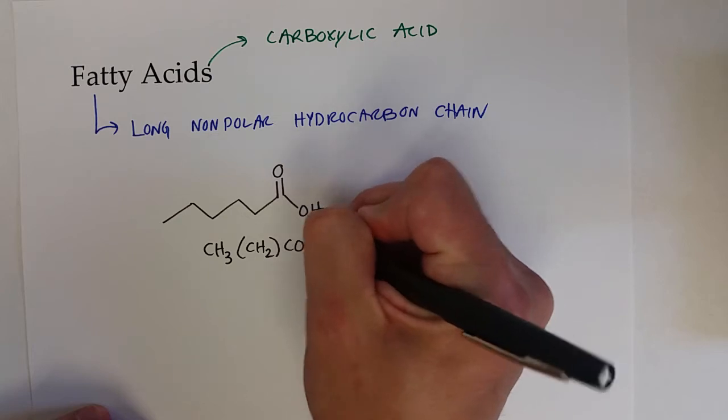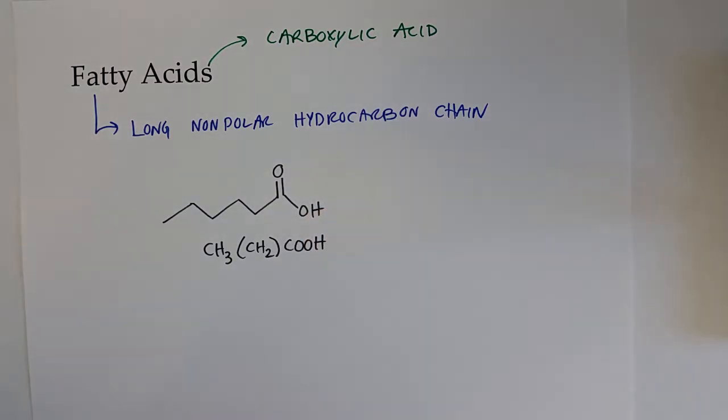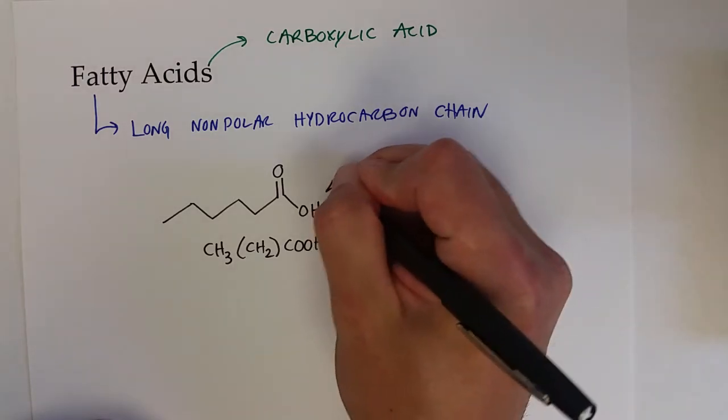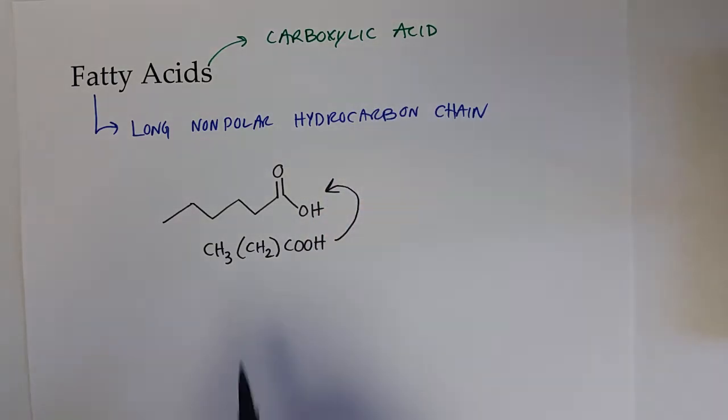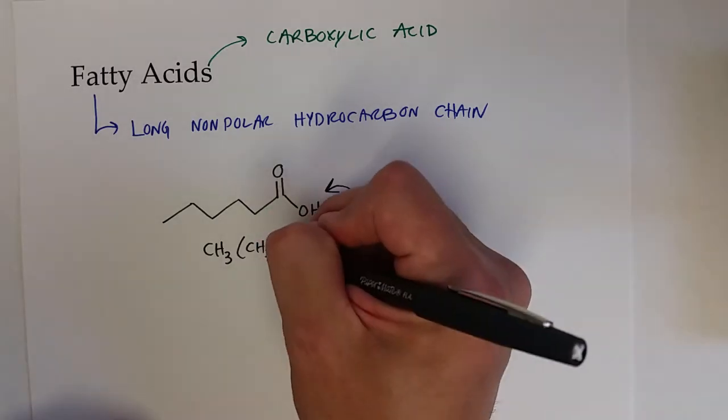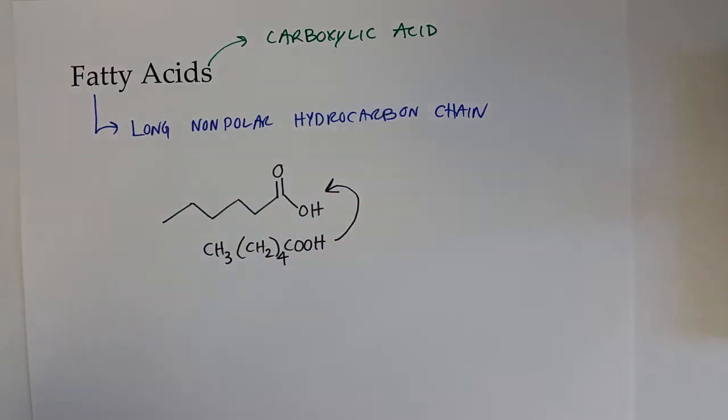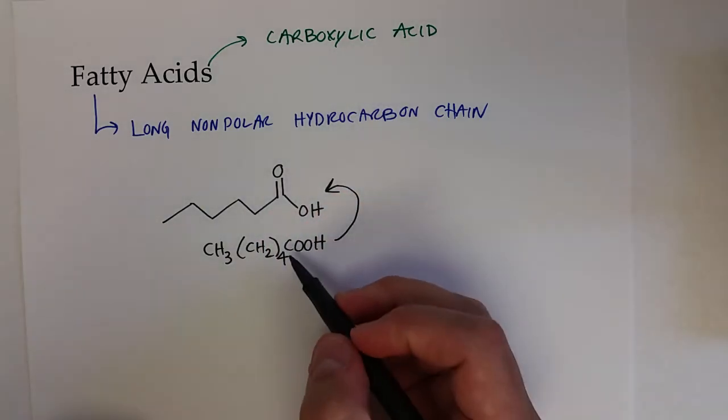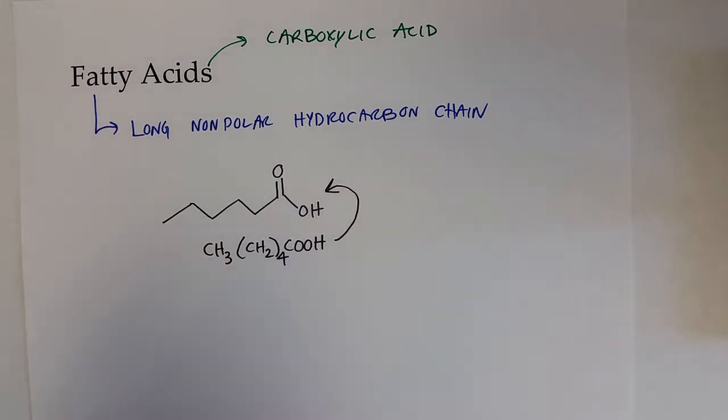And then usually how it's abbreviated in condensed format is the COOH functional group for carboxylic acid. All right, so this is a fatty acid with, oh, I forgot the 4, 4 carbon. So this would be a C5, C6 fatty acid.